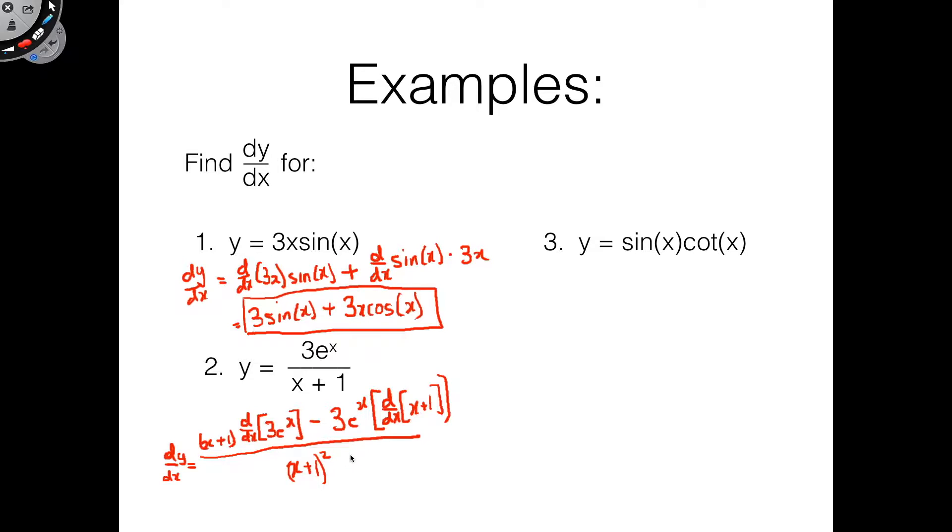So low, the lower function, d high, the derivative of the upper function, minus high, the upper function times the derivative of the lower function, all over low squared. Low d high minus high d low all over low squared. That's just a fun way to remember it if it helps you.